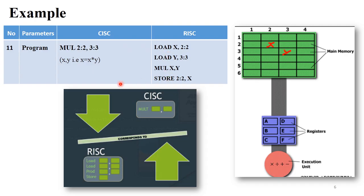Now let's explain the difference using an example. In this diagram, there is main memory, registers, and an execution unit. The value X is present at memory location 2:2 and value Y is present at location 3:3. You need to perform multiplication using either CISC or RISC architecture. In CISC, you simply use the command MUL, directly taking addresses 2:2 and 3:3, and it performs the multiplication — X times Y — and stores the output directly in main memory, because CISC performs operations memory-to-memory.